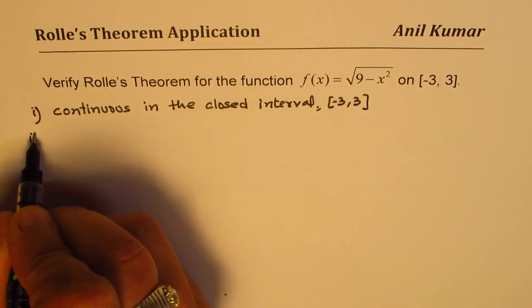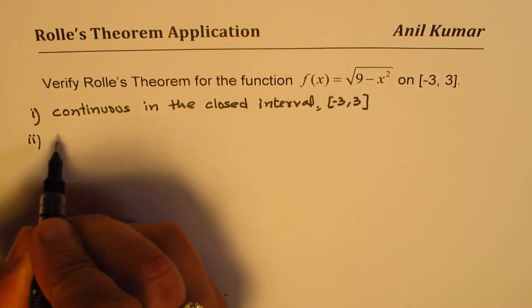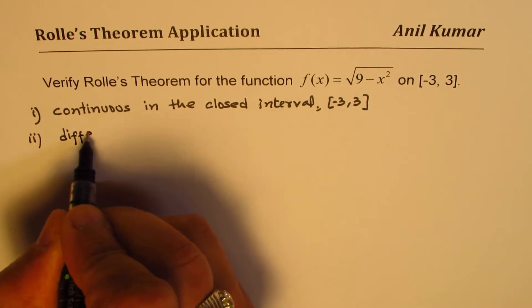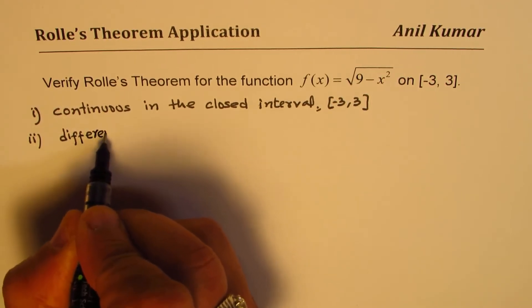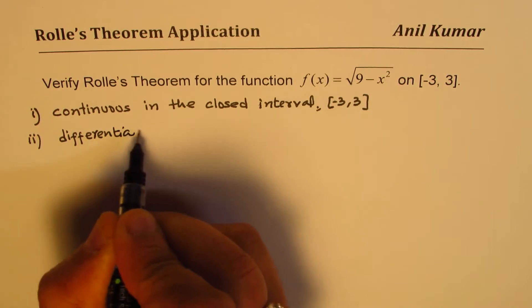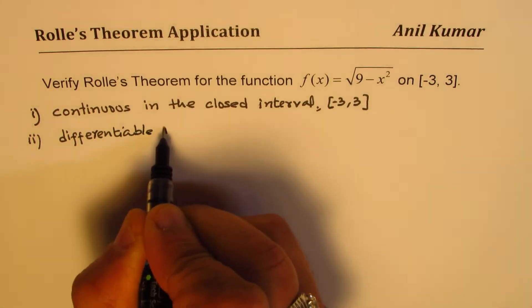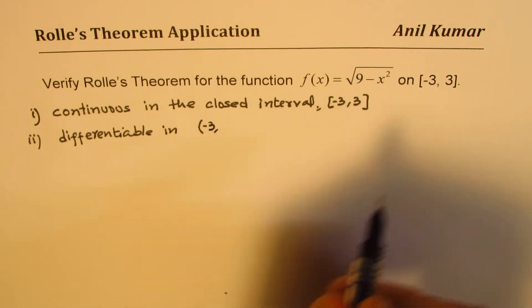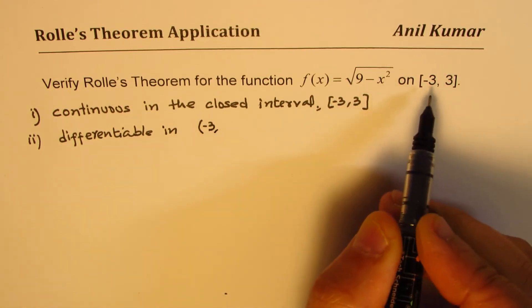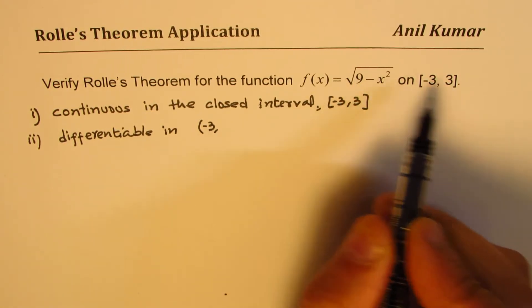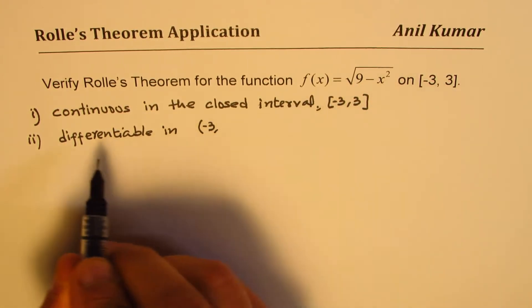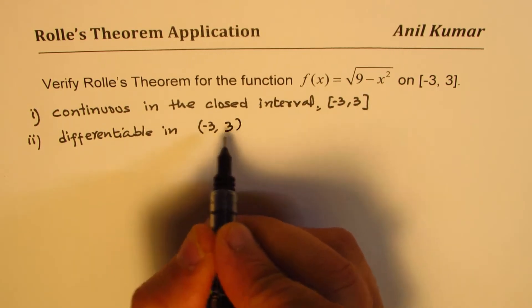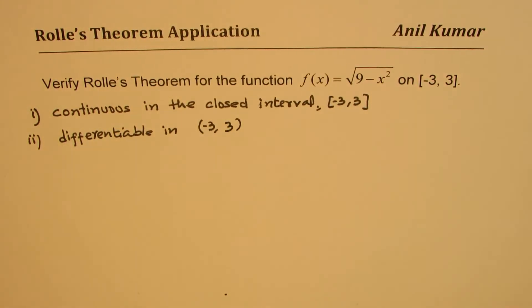The second thing which you need to prove is that the function is differentiable — but differentiable in the open interval. So it may not be differentiable at the endpoints. Differentiable in the open interval, in this case, from -3 to 3.